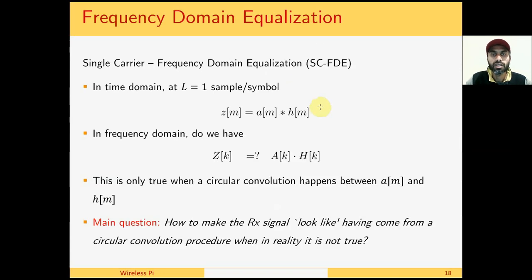Here we discuss single carrier frequency domain equalization. We are dealing with only one sample per symbol as the match filter output. The match filter output was given by the convolution of the up sampled symbols with the channel impulse response. Can we write this as a product in frequency domain? The answer is no, because this equation is only true when the convolution is circular.